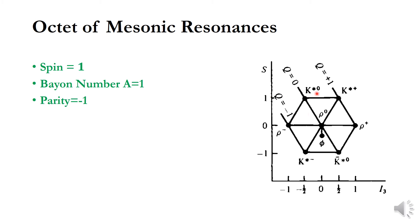The octet of mesonic resonances again contains doublets. The resonance doublet of K⁰ and K⁺ is denoted K*⁰ and K*⁺, where the star represents the resonance particle of K, along with their corresponding anti-particles.